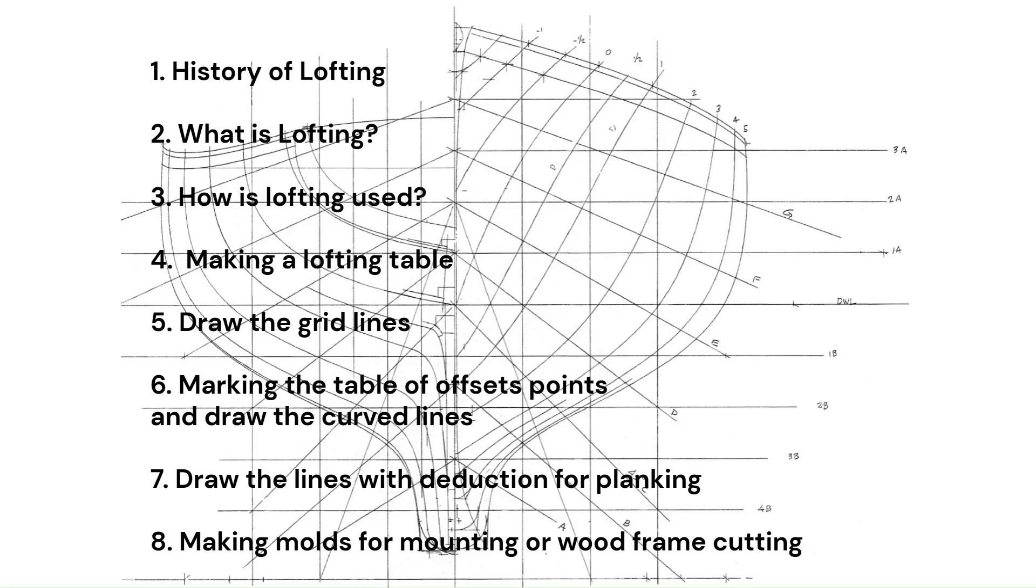This basic course in lofting is divided into chapters presented in two videos. This video is part one. The chapters are: one, history of lofting; two, what is lofting?; three, how is lofting used?; four, making a lofting table; five, draw the grid lines; six, marking the table of offsets points and draw the curved lines; seven, draw the lines with deduction for the planking; and eight, making molds for mounting or wood frame cutting.